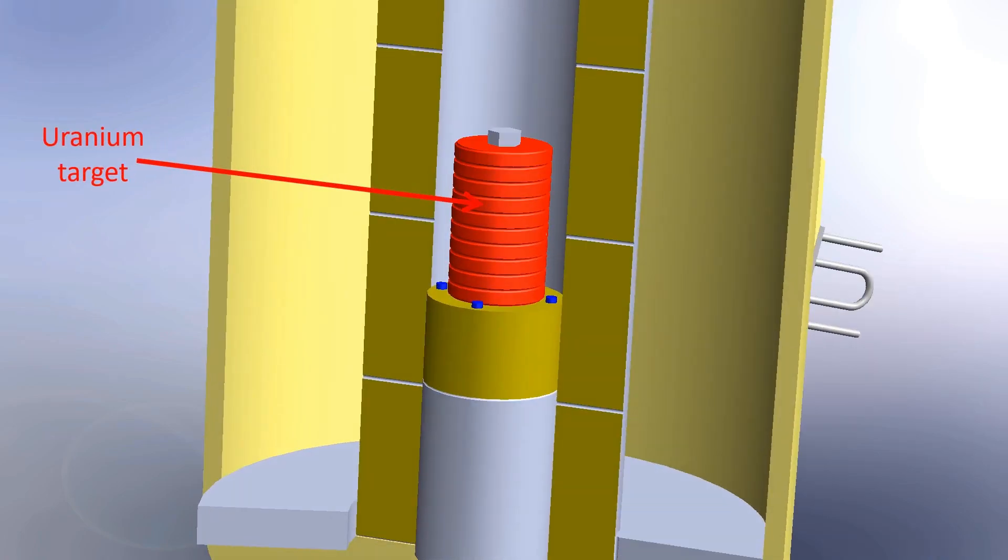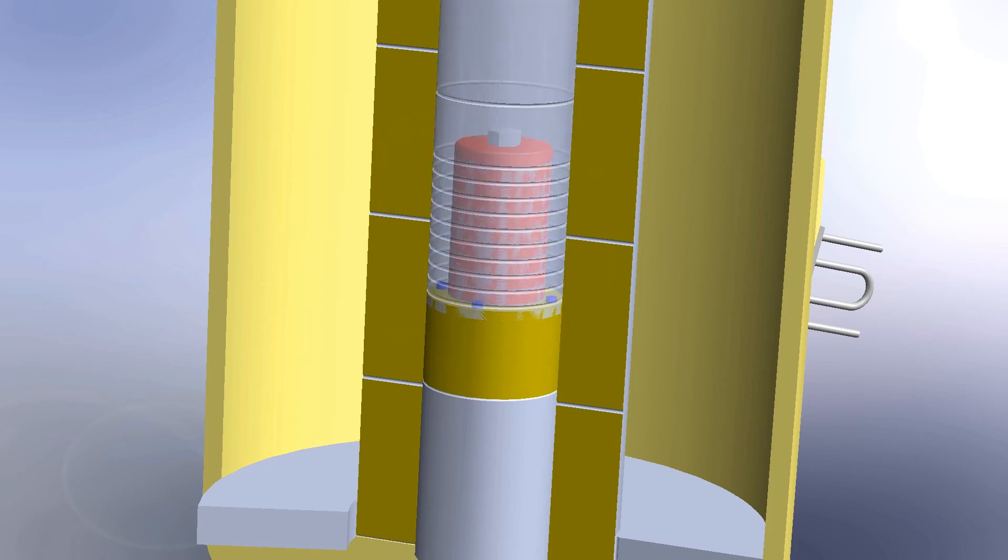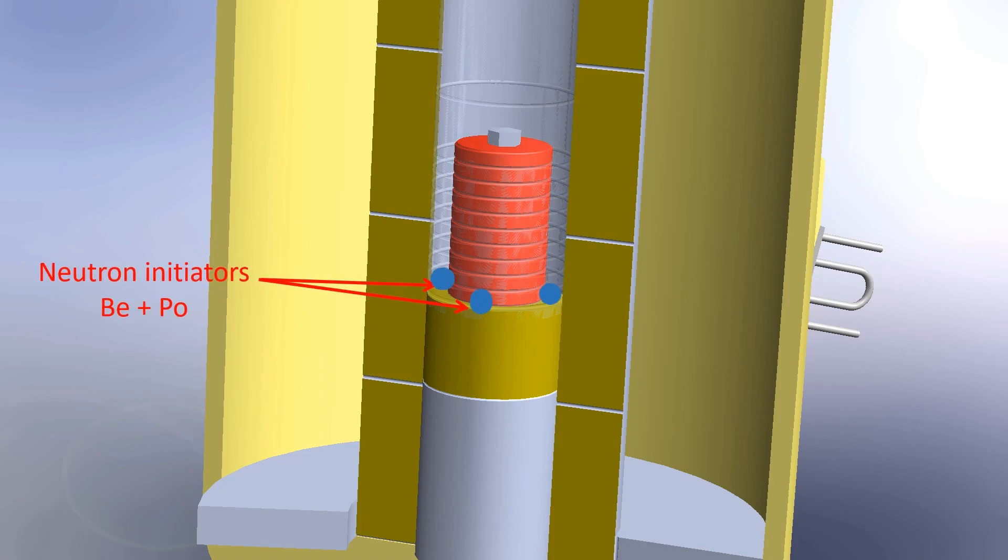When the hollow front projectile reached the target, the assembly of uranium became supercritical mass. The projectile impact cause four neutron initiators, consisting of beryllium and polonium, release neutrons to start the uranium fission chain reaction.